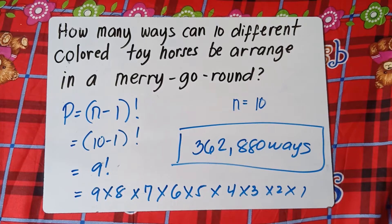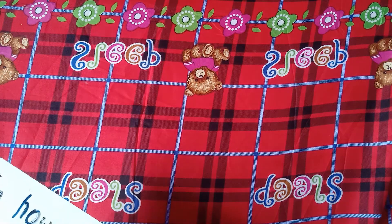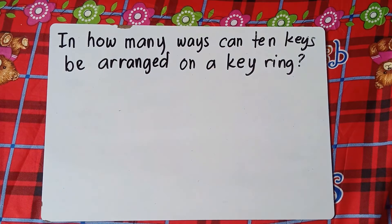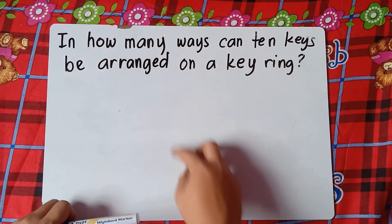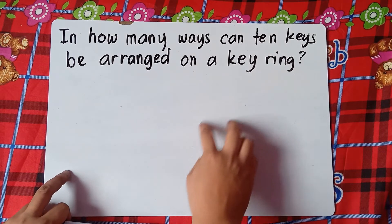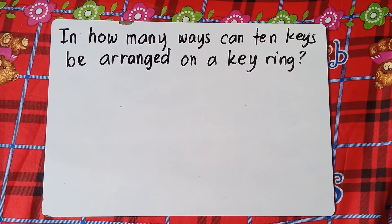Now, what if the example deals with keys or a necklace? That's not the same as a table. There's another formula for that. It's because with key rings or necklaces you can flip them, unlike a table. So if you're dealing with a round table, the formula is N minus one factorial. But if you're dealing with key rings or necklace, there is a different formula.